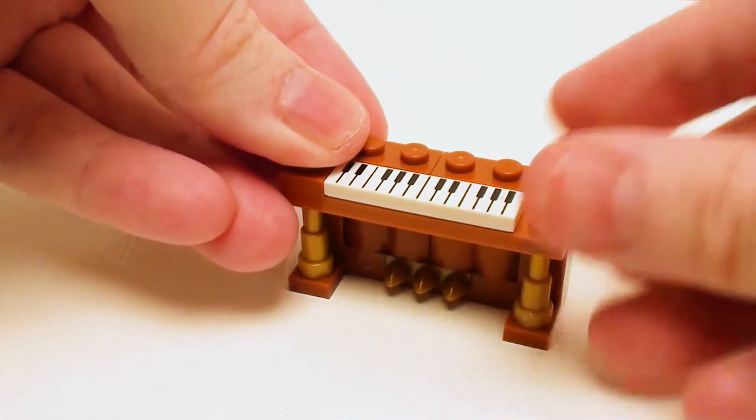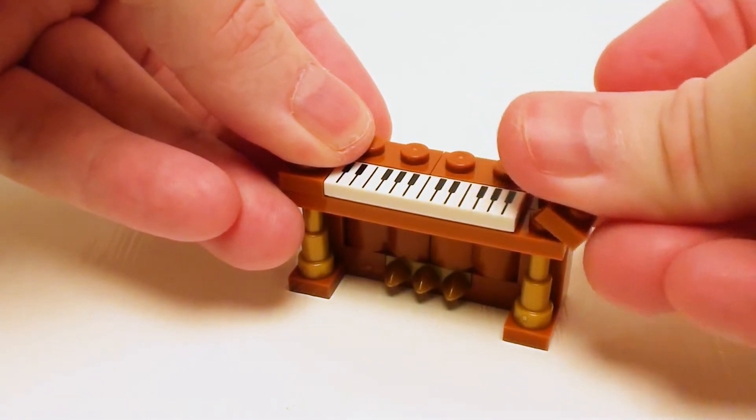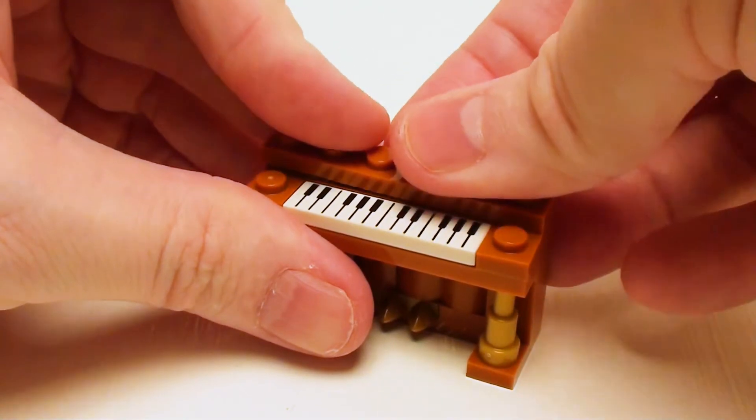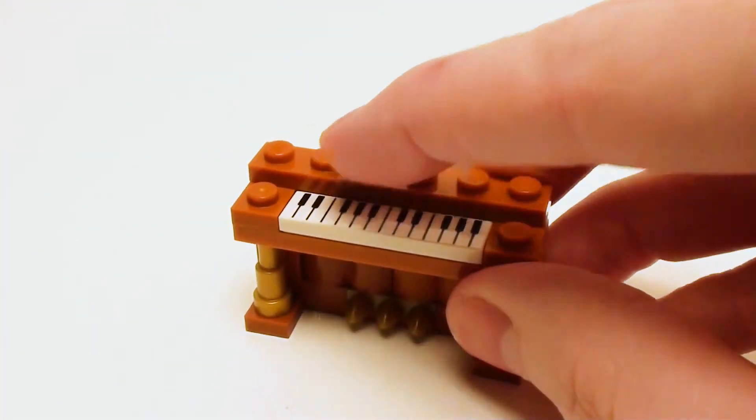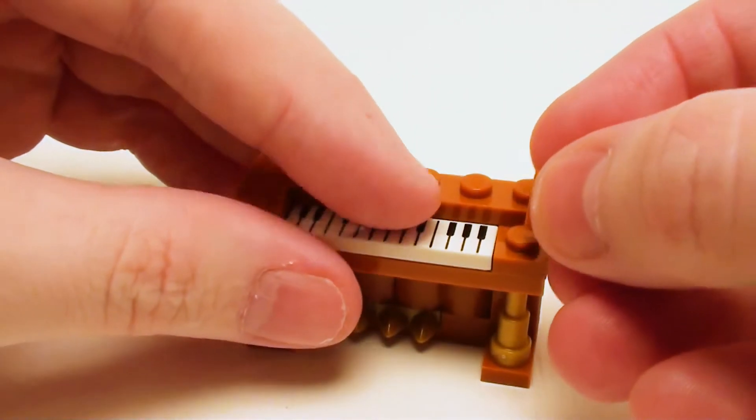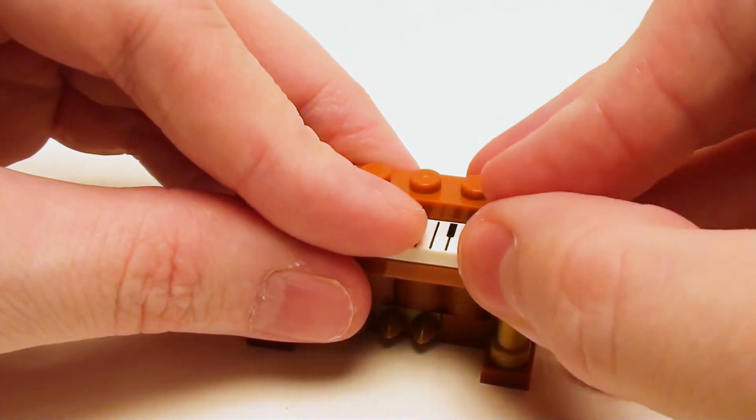And let's surround that with a pair of 1 by 2 plates to lock everything together. In the back, let's secure this with a 1 by 6 plate. And in these two areas right next to the keyboard, some 1 by 1 by 2 thirds slopes.